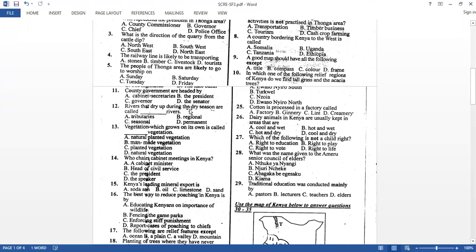Rivers that dry up during the dry season are called. So it means that this river is not permanent because it is drying up. It does not flow throughout the year, we call them seasonal rivers. And then vegetation which grows on its own is what you call natural vegetation. That one that is planted by man, we call it vegetation.